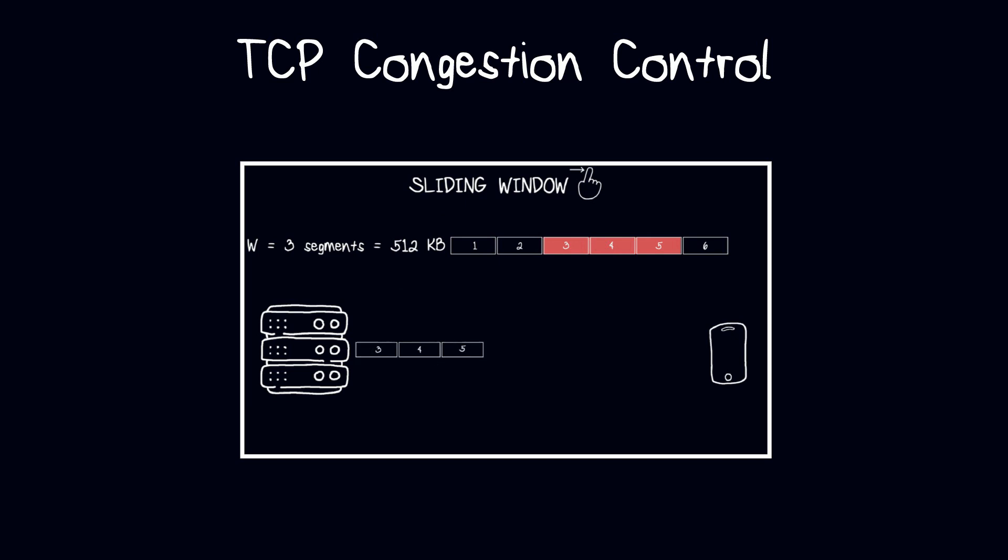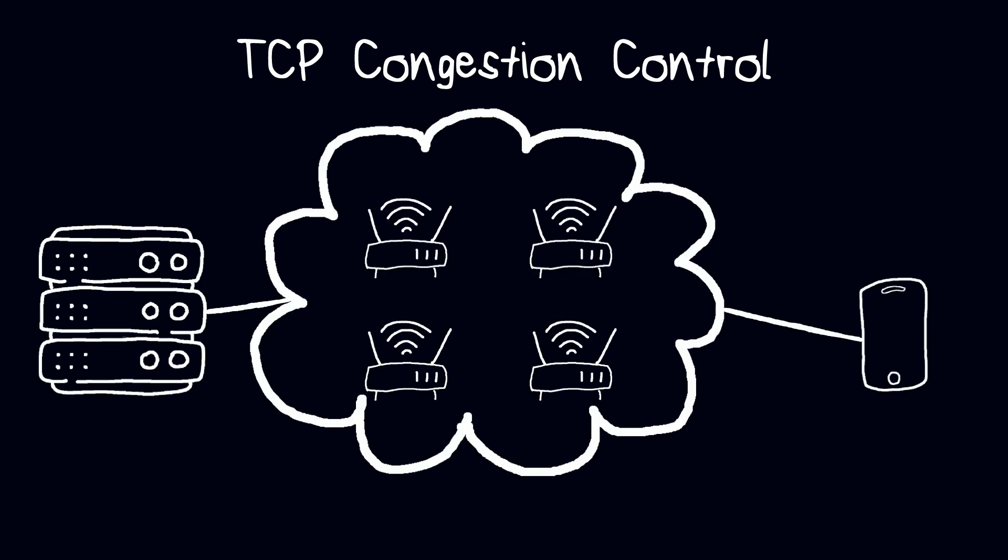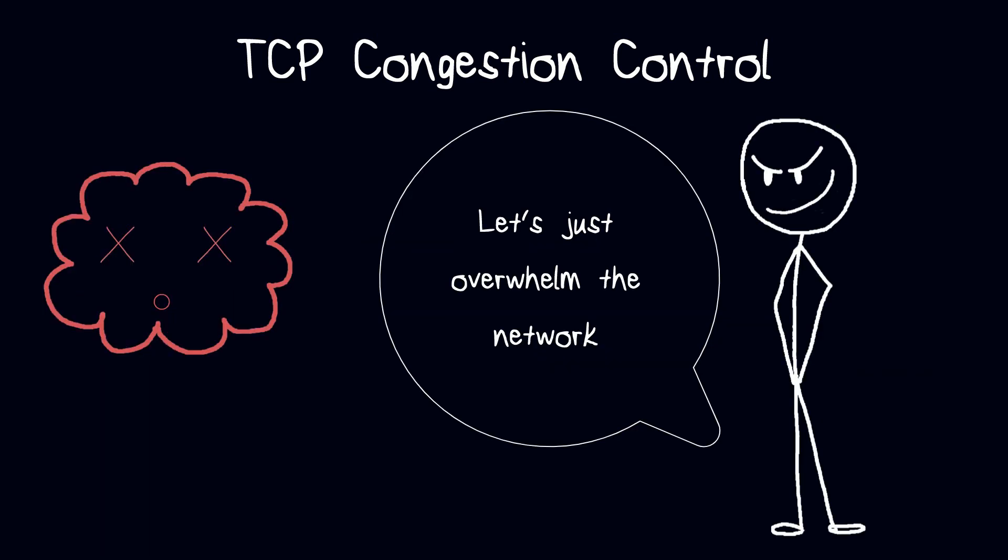However, for efficient communication, flow control alone is not sufficient. That is because devices in the middle of the network, for example routers and switches, also have their own buffers and they might get overwhelmed if we do not take them into account. We do not want to be the bad guys who congest the network, and for this reason TCP congestion control exists.